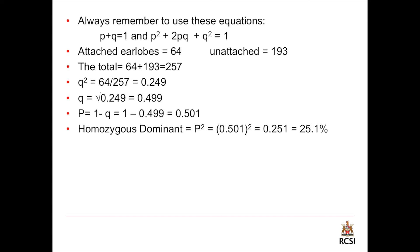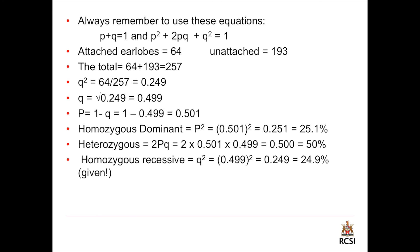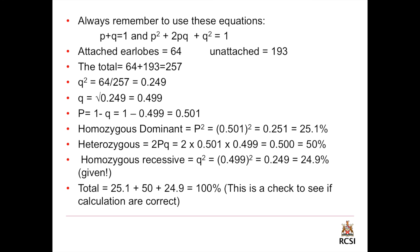To get the percentage of homozygous dominant, multiply p squared by 100: 0.251 times 100 equals 25.1%. For the heterozygous, 2pq equals 2 times 0.501 times 0.499, which gives 0.5, or 50%. Homozygous recessive is 0.249, which gives 24.9%. To verify, use the binomial equation: 25.1 plus 50 plus 24.9 equals 100%. That means your work is perfect.